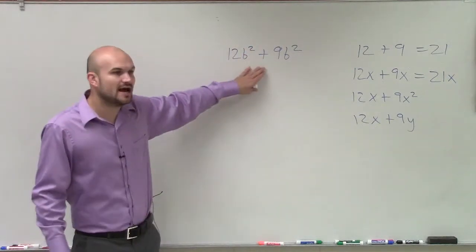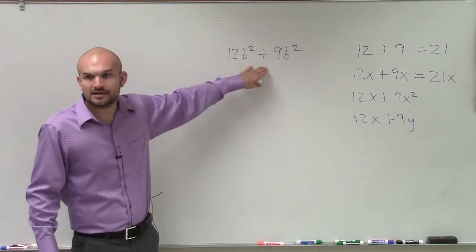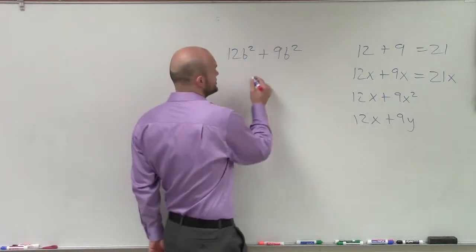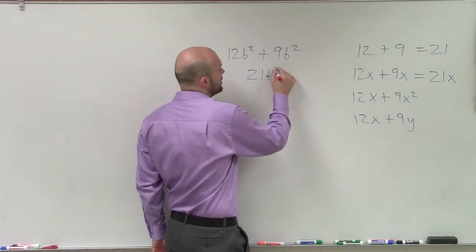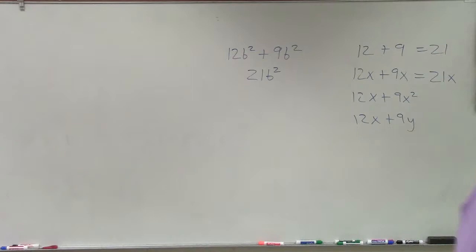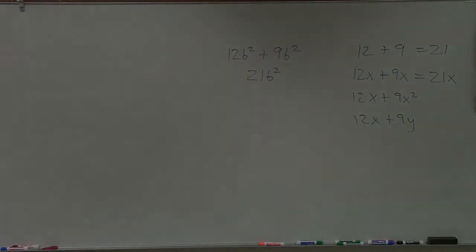However, here I have a b squared and a b squared. Can I combine them now? Do they have the same variable factors? Yes, they do. So the answer to this is just going to be 21b squared. All right, that's that. Now, what if we do?